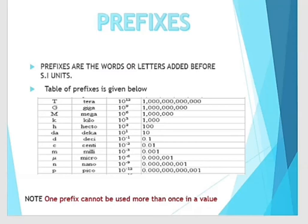Prefixes are the word or letter added before SI unit. Prefixes and their values are given in the table. Prefixes are Tera, Giga, Mega, Kilo, Hecto, Dega, Desi, Centi, Milli, Micro, Nano and Pico.